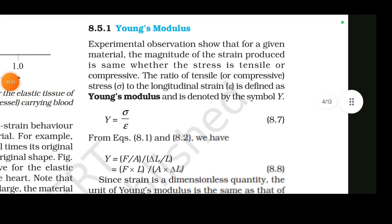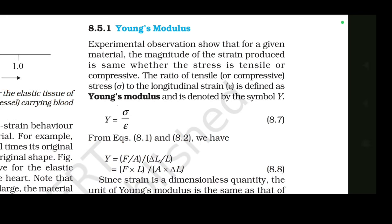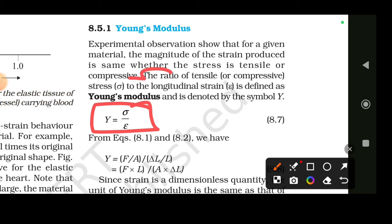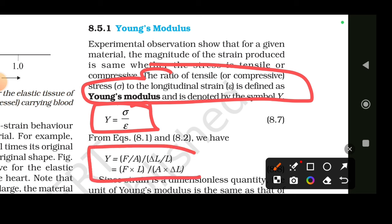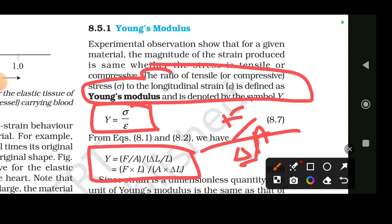Young's modulus is a very important concept. It is defined as the ratio of tensile stress to longitudinal strain. The definition and equation are very important. Young's modulus: tensile stress divided by longitudinal strain. The equation is stress = F by A, and strain = change in length by original length.